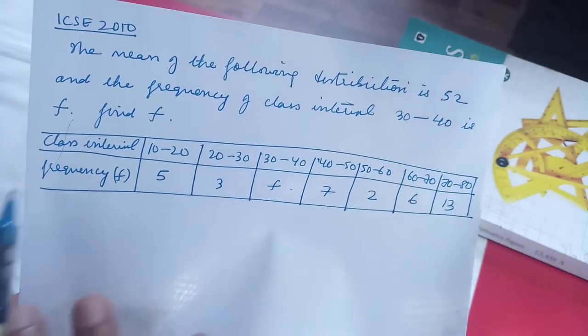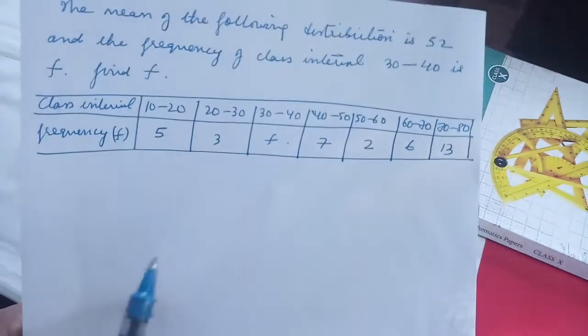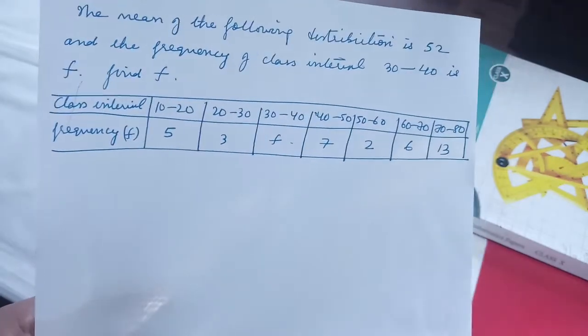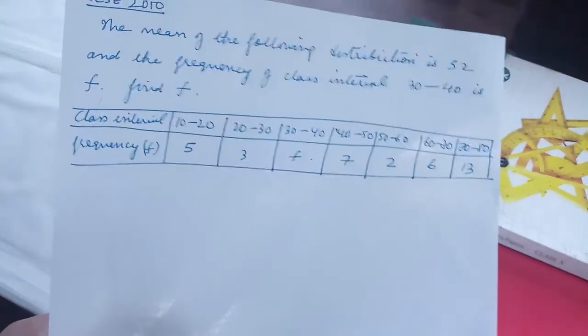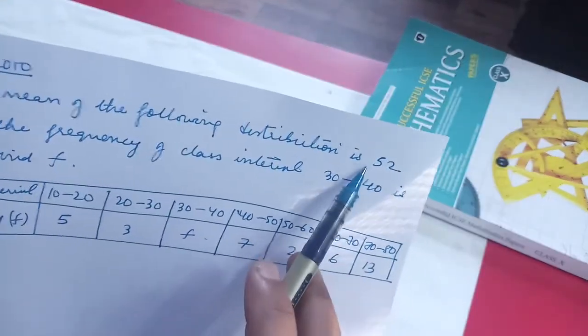So here the frequency is missing and we have to calculate it, but the process and steps will be the same. We have to start in the same way as calculating the mean. We will be taking the step deviation method, which will be easier. First we have to write down the table in a vertical format and find the mean, which is already given as 52.